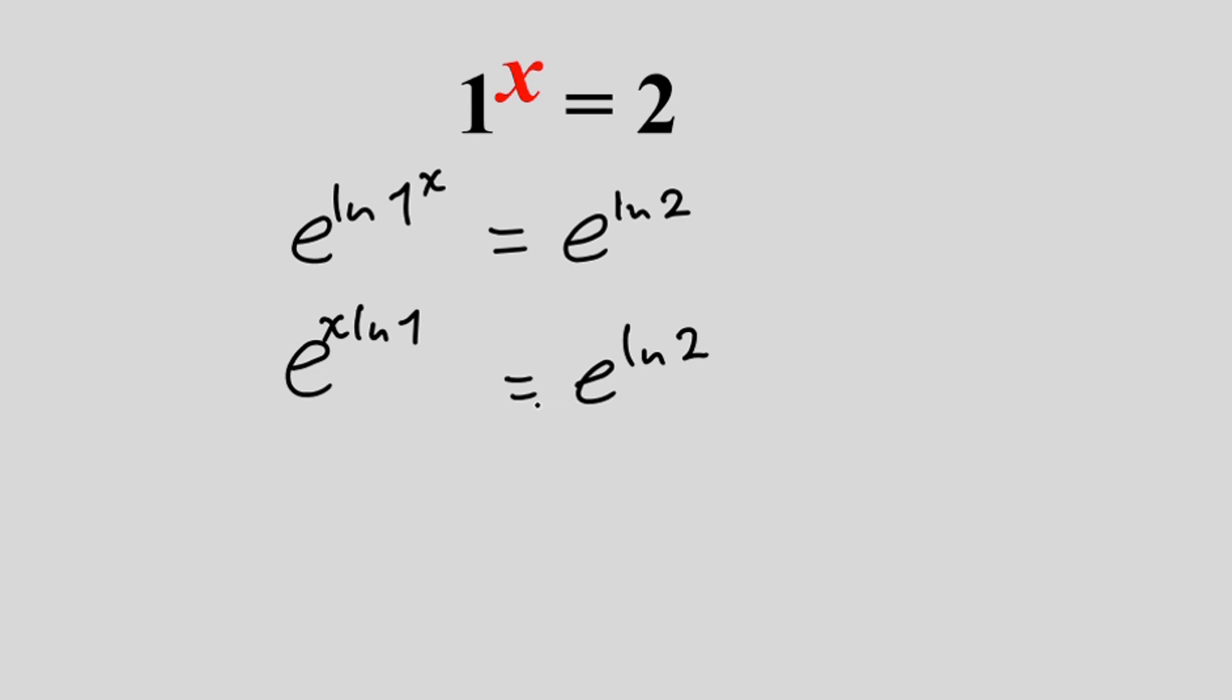Now that the bases are the same, we can equate their powers. Therefore, we're gonna have x ln of 1 is equal to ln of 2. If we divide both sides by ln of 1, we have x is equal to ln of 2 divided by ln of 1.